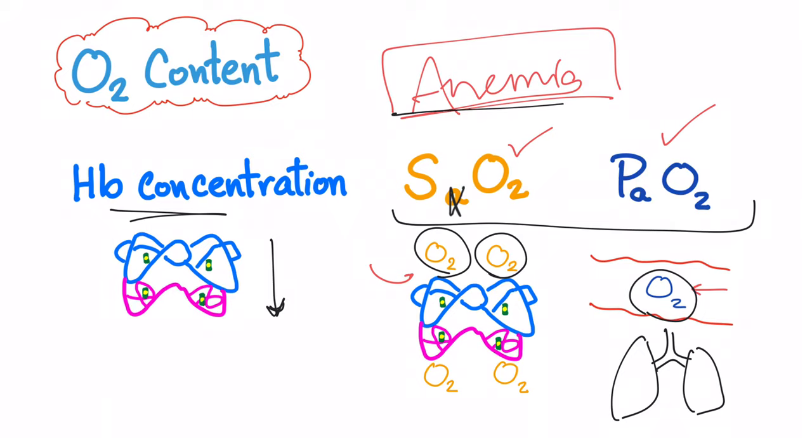However the hemoglobin concentration is decreased. Why? Because anemia has a problem in the total RBC mass and that includes the hemoglobin concentration. So the hemoglobin concentration in anemia is really low, so the oxygen content will be decreased due to decrease in hemoglobin concentration. However both the percent saturation of oxygen and the partial pressure of oxygen are completely normal. This is insanely important to understand - anemia: saturation normal, partial pressure of oxygen normal, hemoglobin concentration decreased, oxygen content decreased.